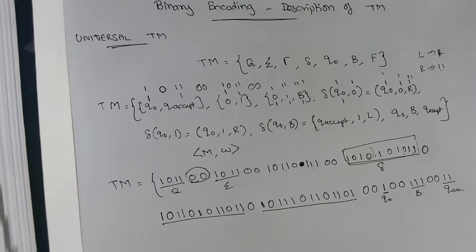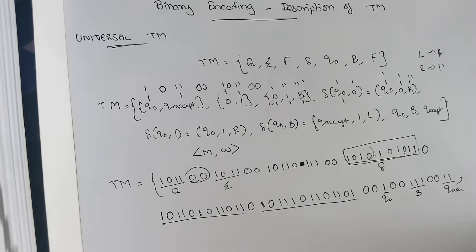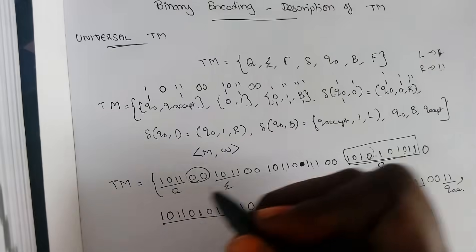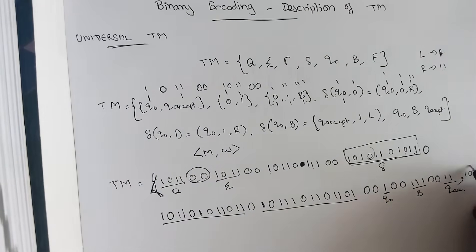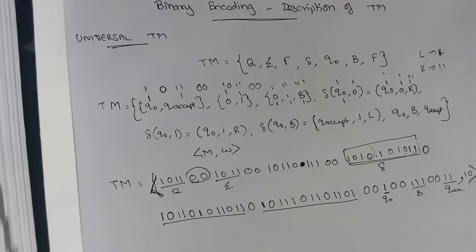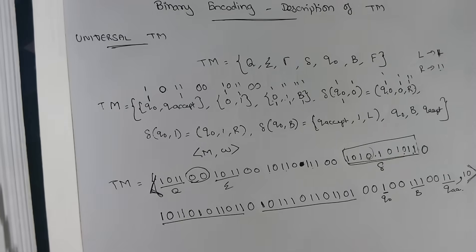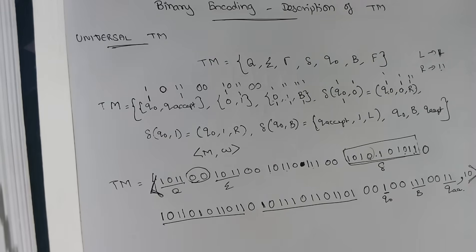Usually we use the representation of a Turing machine as angle-bracket M comma W. When you run a Turing machine, you have the machine description along with the input symbol, so you describe both with a comma as a separator. For example, if my input is one zero, I use a representation like this. This is called binary encoding of a Turing machine, and it is used in a Universal Turing Machine. To repeat: a Universal Turing Machine is one which can simulate the working of other Turing machines — it can make other Turing machines work inside itself. When the inner Turing machine accepts, the Universal Turing Machine accepts the input.